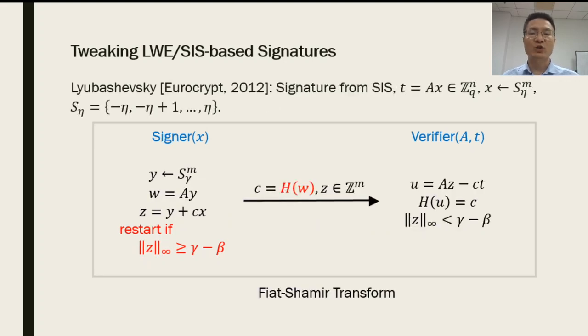By applying the Fiat-Shamir transform, we obtain a signature from SIS by hashing the vector w to obtain a challenge c.